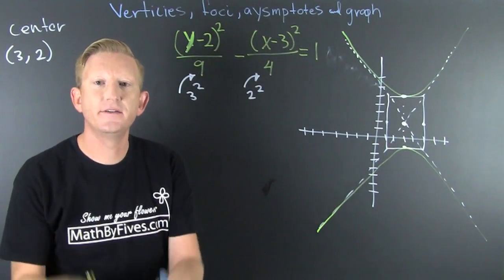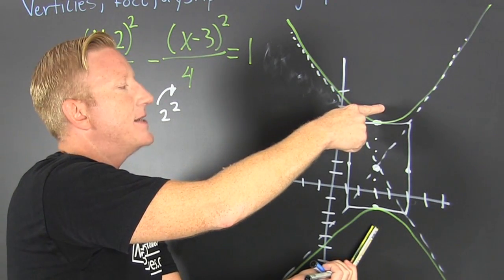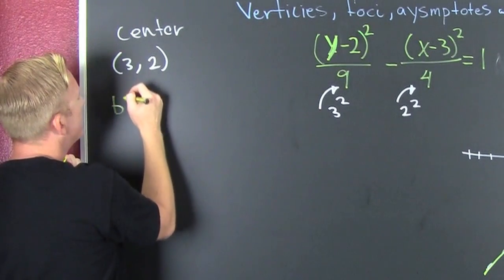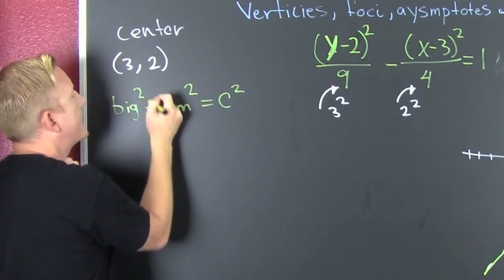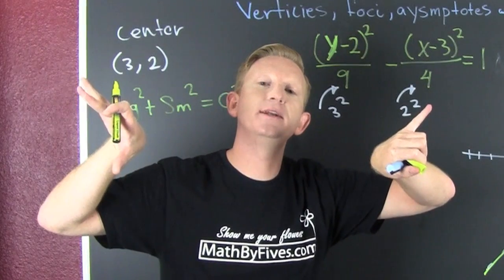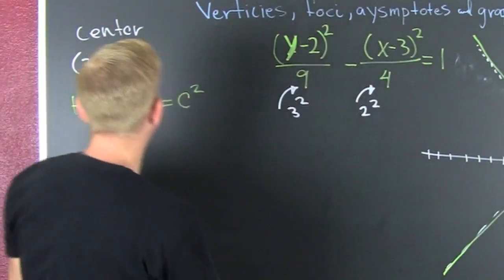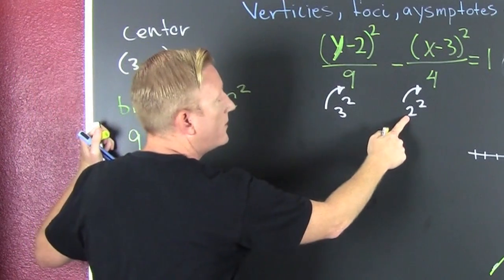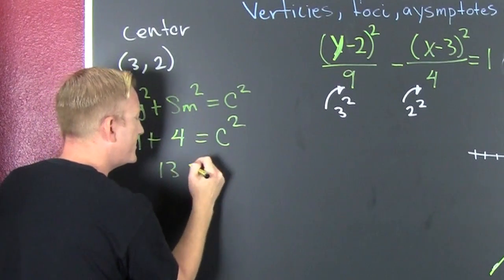Now let's find the foci. The foci lie on the side that cups them. For a hyperbola, the formula is: big² plus small² equals c². It's a plus — not a minus like with an ellipse — because the foci lie on the outside, so we add distance. My big squared is 9, plus my small squared is 4, so c² = 13.